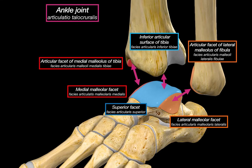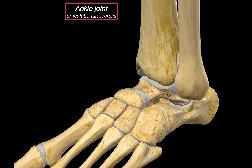We already covered all of these bony surfaces in the video about the bones of the foot, so I'm going to assume you're already familiar with the talus and the rest of the bones. If not, I highly recommend going back and watching that video first — it will make this video a lot easier to follow. Now let's reassemble them. Surrounding the whole joint is its capsule, attached to the borders of the articulating surfaces, helping to enclose and protect the joint space.